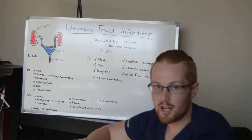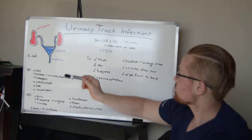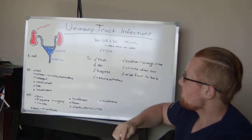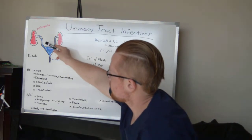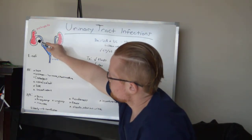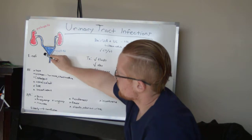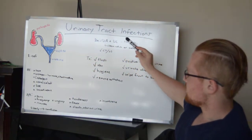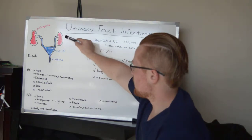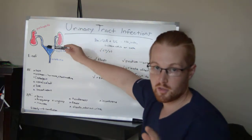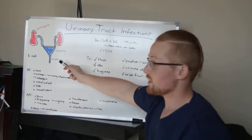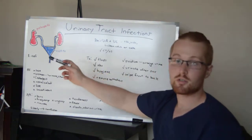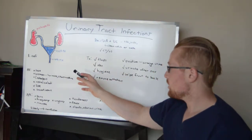Let's dive into urinary tract infections. The urinary tract includes the kidneys, ureters, bladder, and urethra. When we're talking about urinary tract infection, we're not talking about the kidneys—that would be pyelonephritis, which I'll cover in my next video. We're talking about cystitis or urethritis: cystitis referring to infection of the bladder and urethritis meaning infection around the urethra.